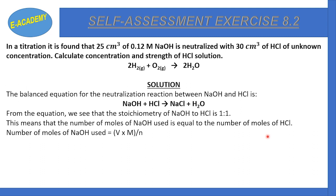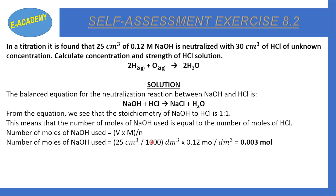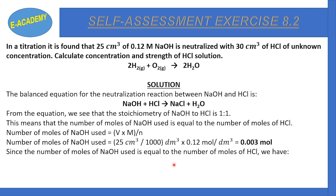Using the formula: moles = volume × molarity, the volume is 25 cm³, which we divide by 1,000 to convert to dm³, then multiply by 0.12 molar. This gives us 0.003 moles of NaOH. Since moles of NaOH equal moles of HCl, moles of HCl = 0.003 moles.